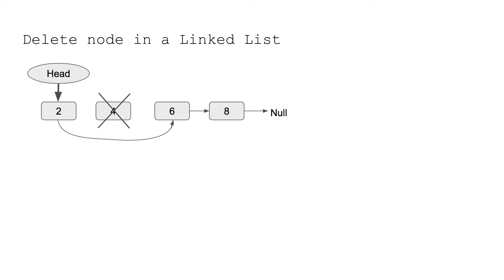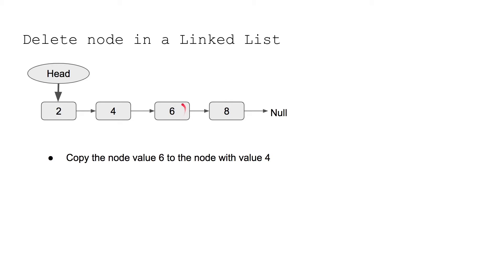What are the possible ways to do it? In a singly linked list we cannot access previous nodes. Normally, if we have access to the head, we traverse the list, find the node to delete, and change the previous node's link to point to the next node. But here we can't do that. So what we can do instead is simply copy the value of the next node into the current node.